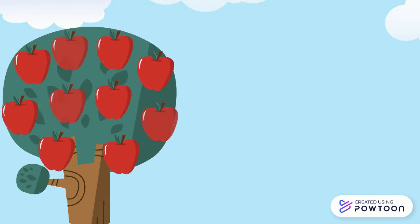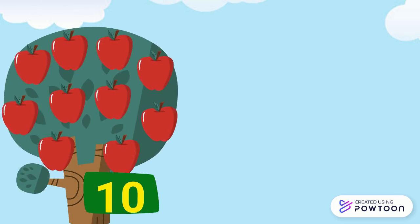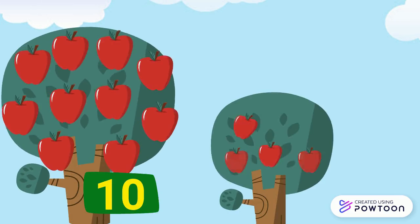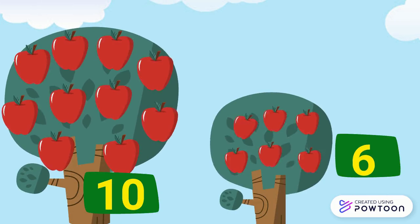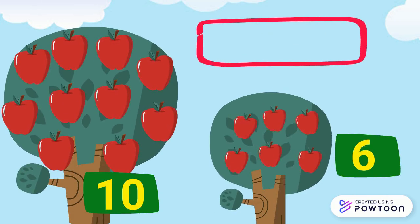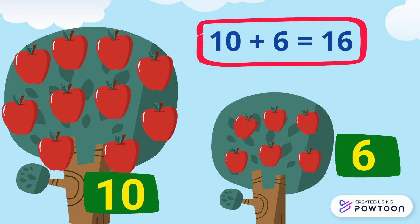On the big tree there are 10 apples, and on the small tree there are 6 apples. So 10 plus 6 equals 16.